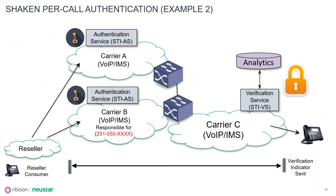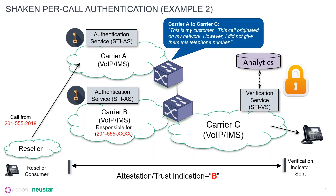Let's look at a different example. I'm calling the customer here a reseller — think of that as anyone who is providing phone service and leasing phone numbers from one or multiple carriers. In this case, we'll say multiple carriers. We're assuming end-to-end IP here. The reseller is making a call from a number that was assigned from carrier B, but by using least cost routing and other mechanisms, that call is going to originate through carrier A. They are the ones actually signing because they are the ones that have that phone number and are currently part of the SHAKEN ecosystem as it's being defined.